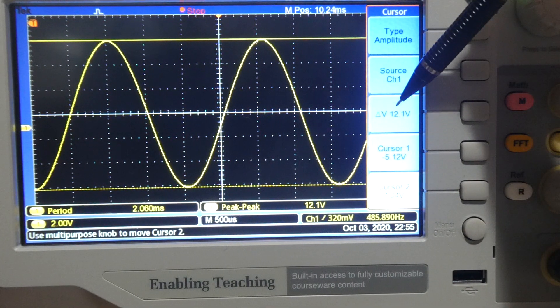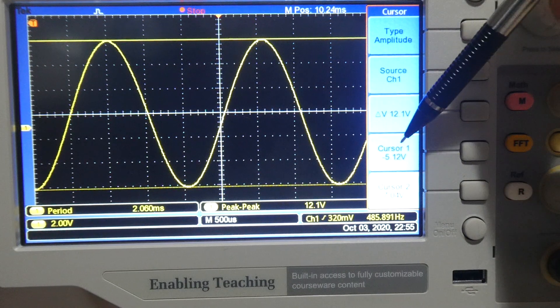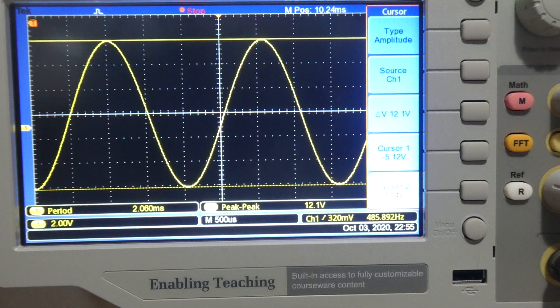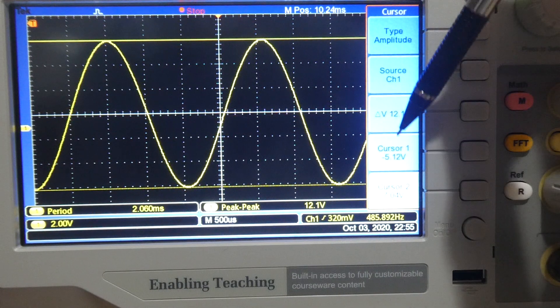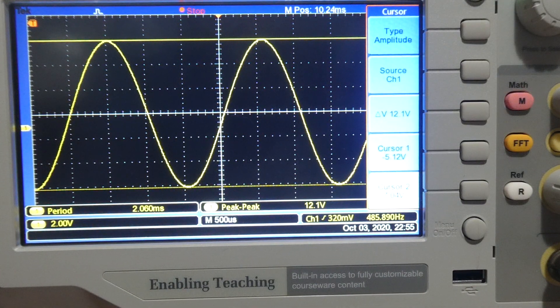That's given us a total voltage peak to peak of around about 12.1 volts. So the difference between those two, or the addition of them, taking the minus 5 to a positive peak to peak, has given us around about 12 volts.